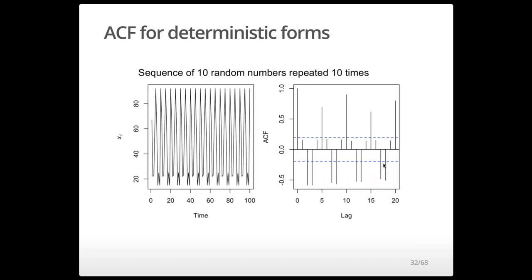Here's a sequence of 10 random numbers repeated 10 times — simply 10 random numbers concatenated with themselves. The ACF shows significant lags at 10 and 20, which makes sense because those are the points where peaks and troughs align with each other. There are also some other spurious significant lags that happen to appear.